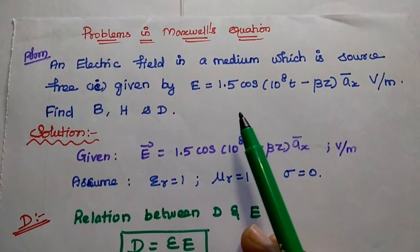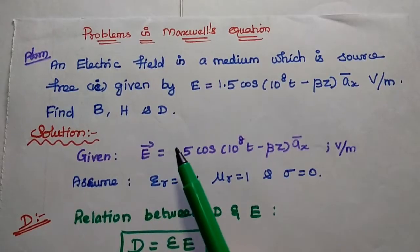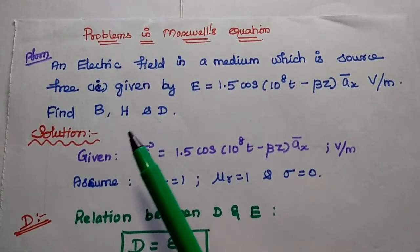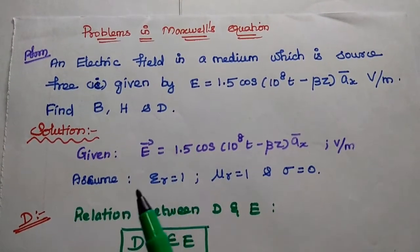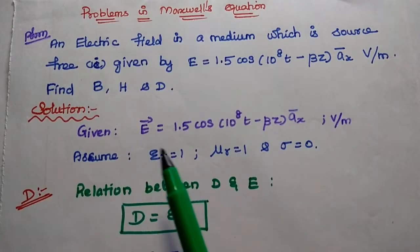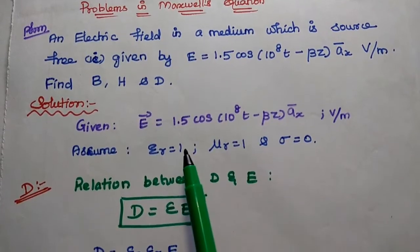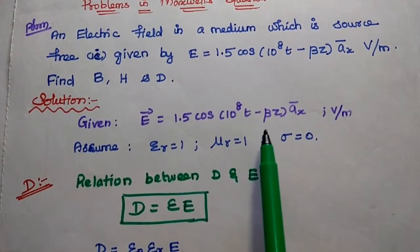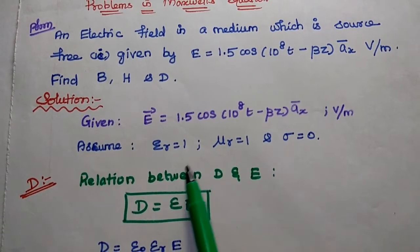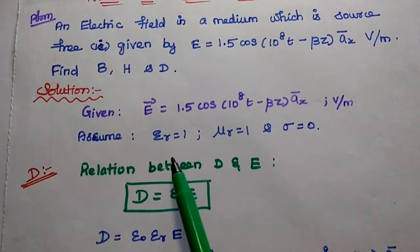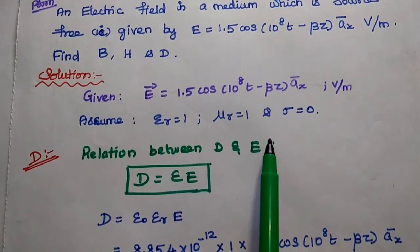Here they have given us the electric field intensity E, and we are going to find out the magnetic flux density B, magnetic field intensity H, and electric flux density D. The given data is E = 1.5 cos(10^8 t − β z) â_x. Since the medium is a source-free medium, we assume ε_r = 1, μ_r = 1, and conductivity σ = 0.